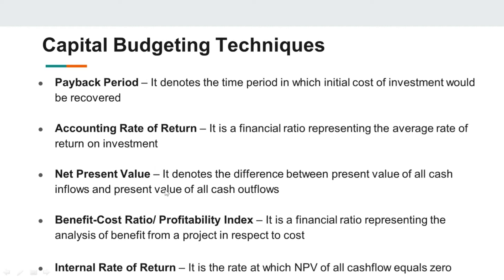Net present value (NPV) is the most commonly used capital budgeting technique. It denotes the difference between the present value of all cash inflows and the present value of all cash outflows. Cash inflows represent money coming into the business and cash outflows represent money going out. A positive NPV indicates the project should be accepted, while a negative NPV indicates it should not be accepted, as cash outflows would exceed cash inflows.